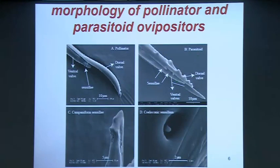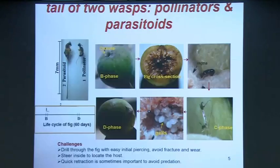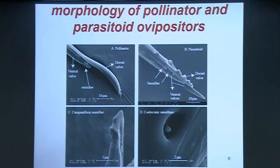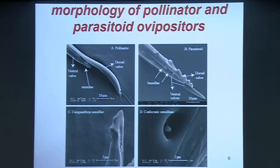When you look at the two different ovipositors, you already start seeing differences. The parasitoid, who needs to cut from outside, has an extremely long ovipositor. At the business end you see teeth-like structures — it almost looks like a drill bit you would have as a mechanical tool. The pollinator has a more spoon-shaped morphology with many sensory structures. The tool itself is about 10 to 15 microns, and the part which enters is about 4 to 5 millimeters — it's like taking your hair and trying to push it inside wood. That's the challenge that the wasp has.